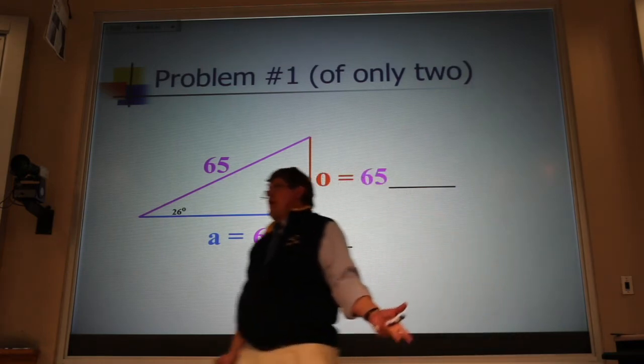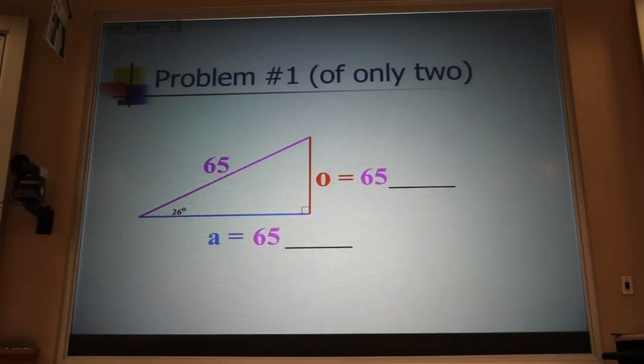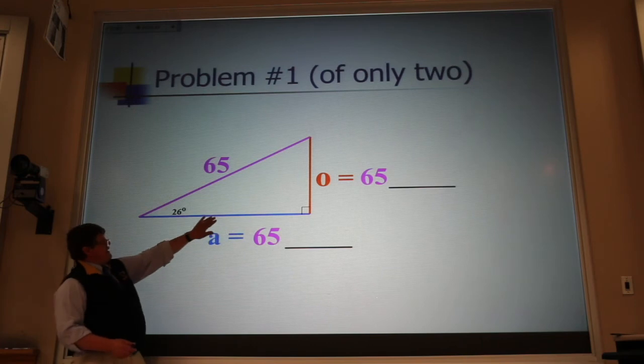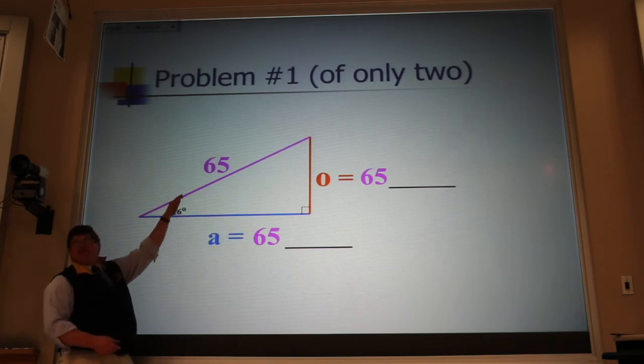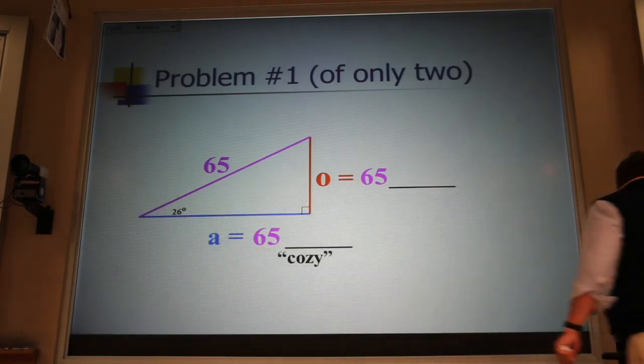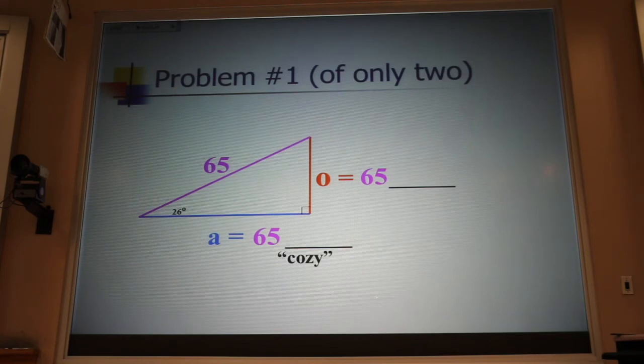Now, the fudge factors are sine and cosine. And all you have to remember is which one gets a sine and which one gets a cosine. Now, here's the genius of my plan. I notice that this side here is cozy, cozy with this angle. And so it gets the cosine and the other one gets the sine.